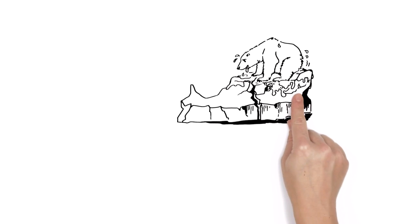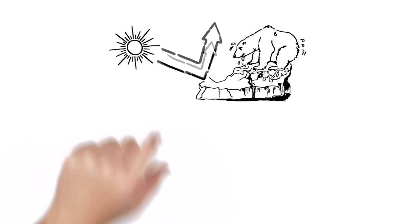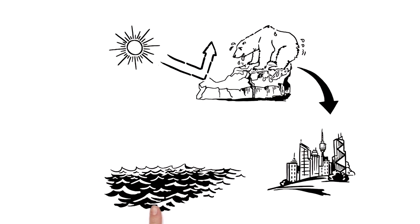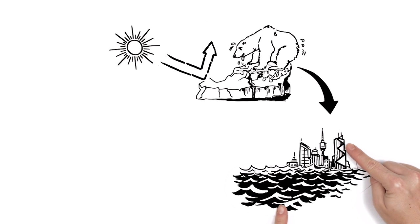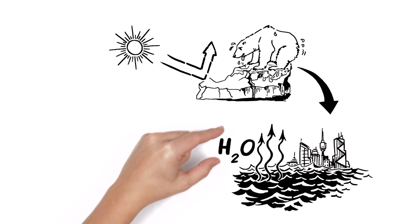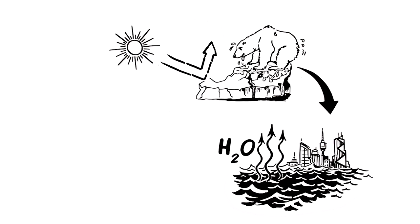When polar ice and glaciers melt, they reflect less sunlight and the sea level rises. Millions of coastal inhabitants are in danger. Additionally, water evaporates, which increases the greenhouse effect.